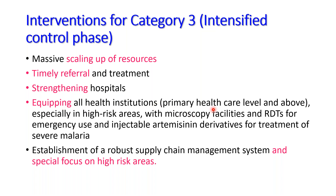For Category 3 intensified control phase states, interventions include massive scaling of healthcare resources, strengthening referral and treatment, equipping all health institutions at primary healthcare level and above, especially in high-risk areas with microscopic facilities, rapid diagnostic tests for emergency use, and injectable treatment. There is also provision for establishment of a robust supply chain management system with special focus on high-risk areas.